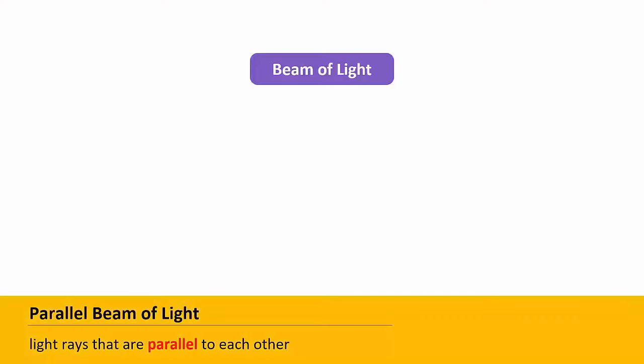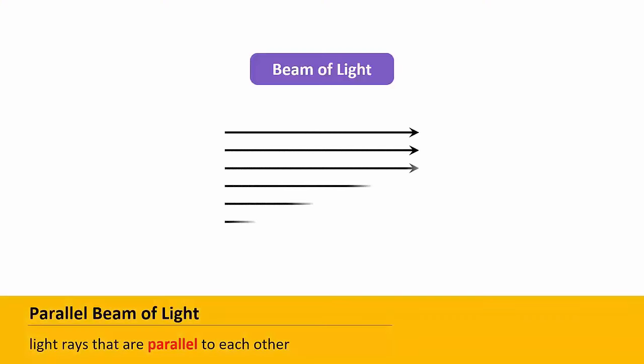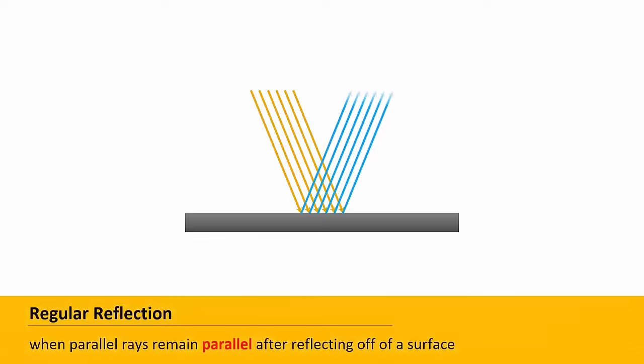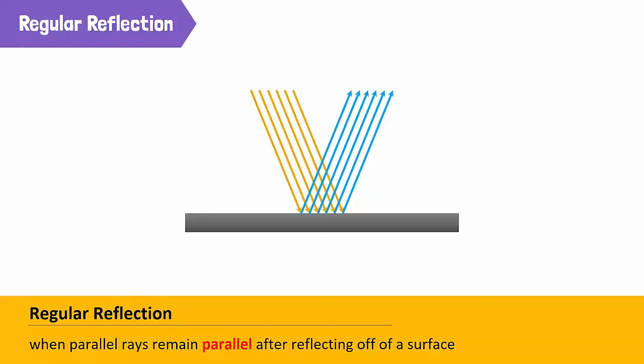A parallel beam of light is made up of light rays that are parallel to each other. When a parallel beam of light falls onto a smooth surface, all rays are reflected at the same angle and remain parallel after reflection. This type of reflection is called regular reflection.